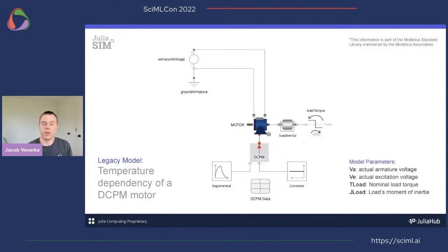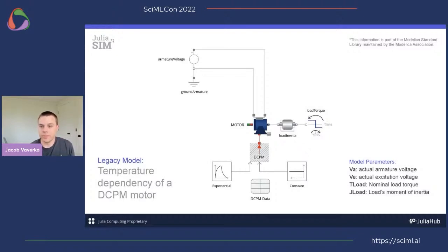I'm going to quickly run through an example of a DCPM motor model, which is just measuring the influence of armature temperature on performance. Note the model parameters on the bottom right: we have voltage and load, and we're going to see how we can train a surrogate over this model with these parameters.